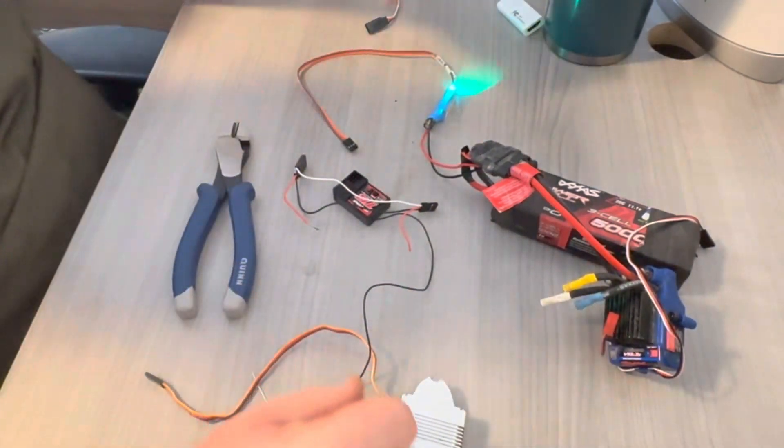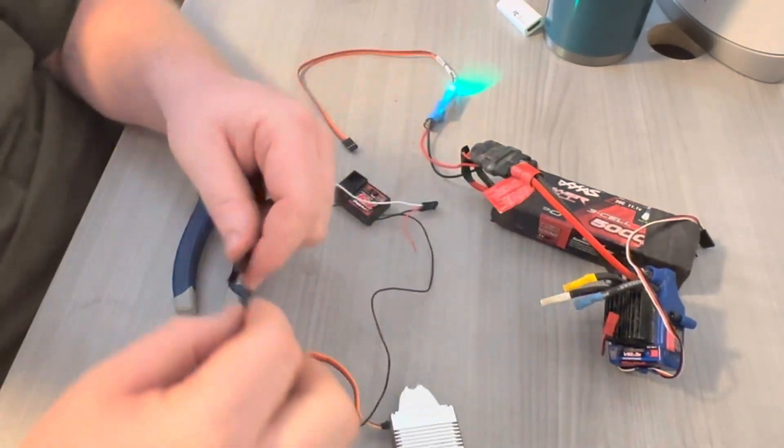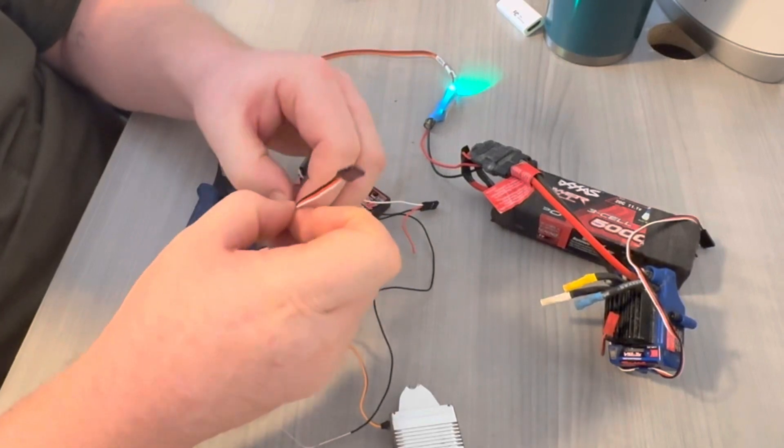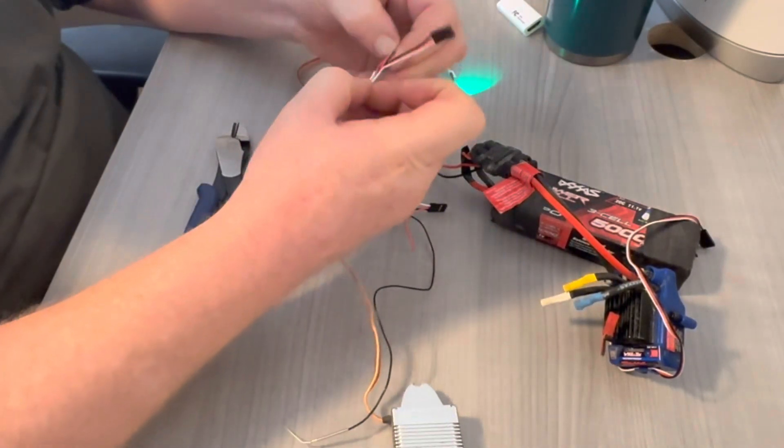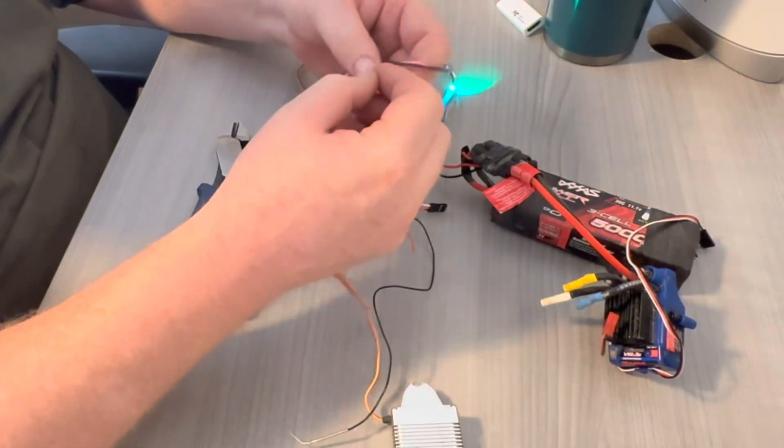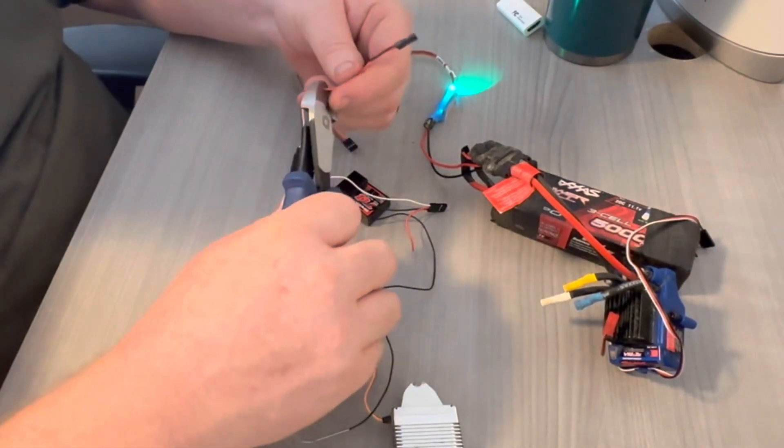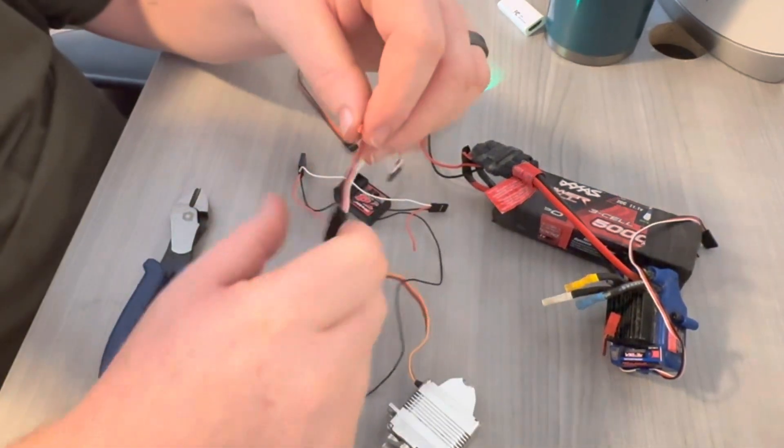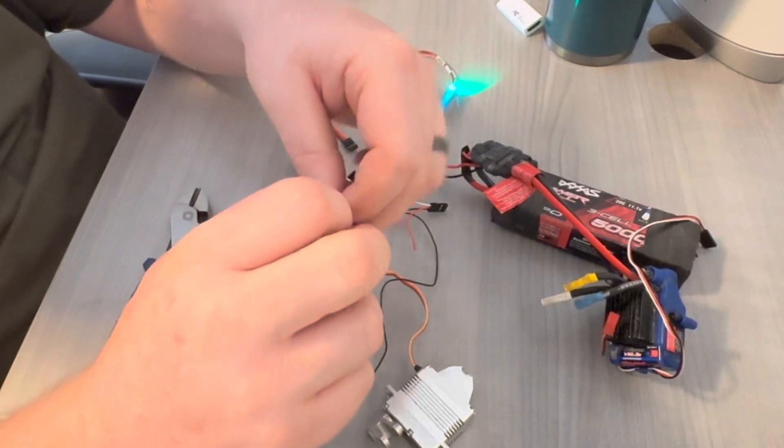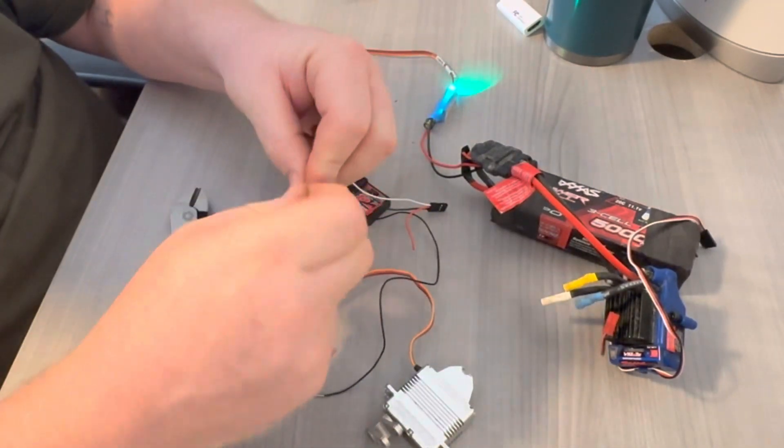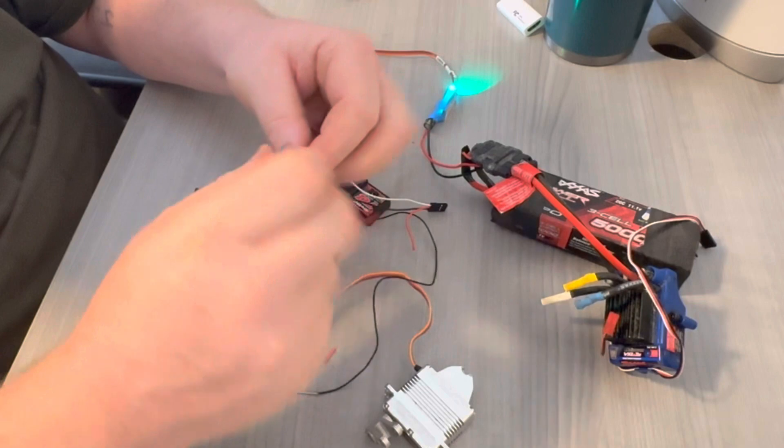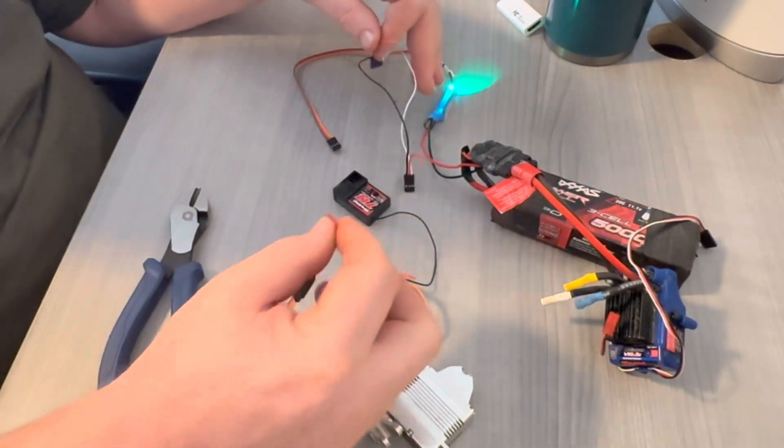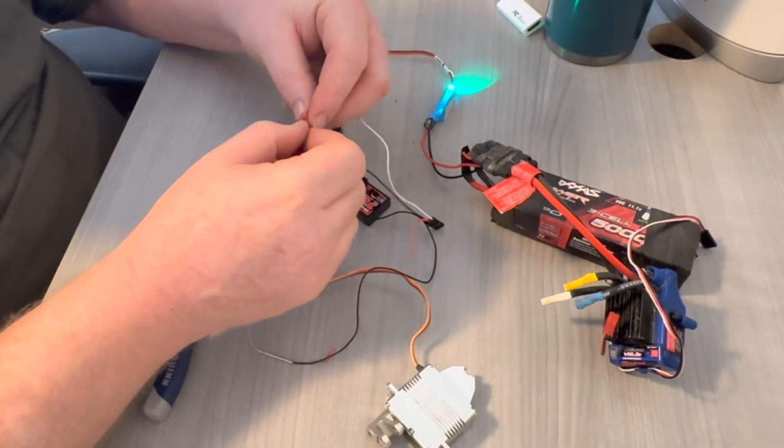And then what we're going to do is get another one. We're going to plug that into the receiver like this. And then again, we're going to take that red wire out and splice it. Then we're going to splice the end coming out of the servo. Basically all we're doing is connecting the power coming out of the BEC into the power on the servo.